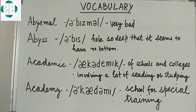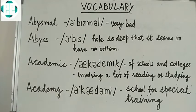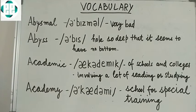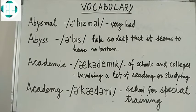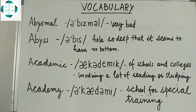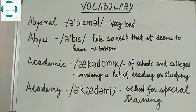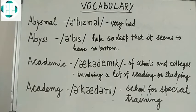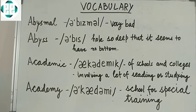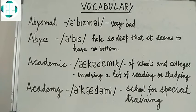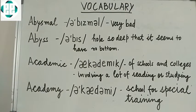The first one is 'abysmal.' Abysmal means very bad. The next one is 'abyss.' Abyss means a hole so deep that it seems to have no bottom. The next one is 'academic.' Academic means of schools and colleges.